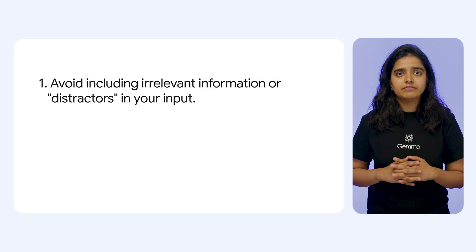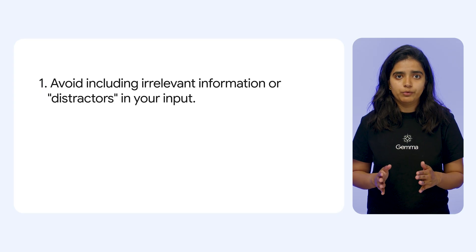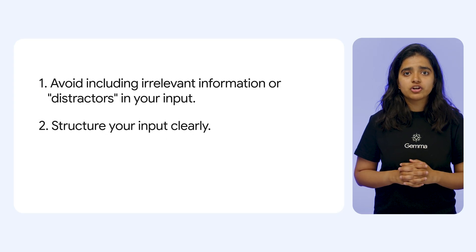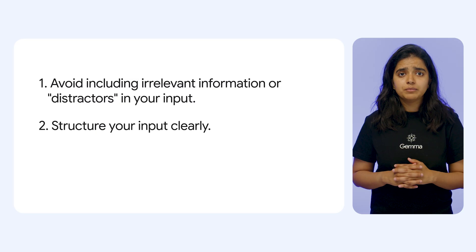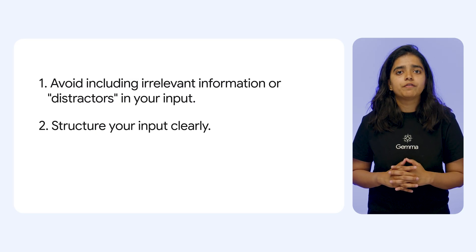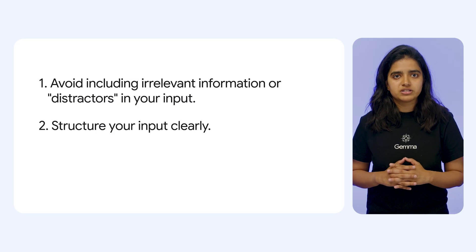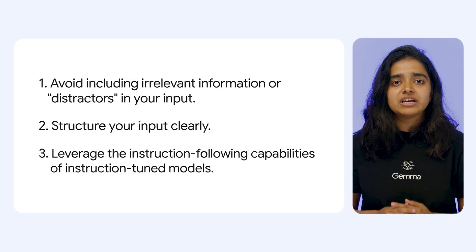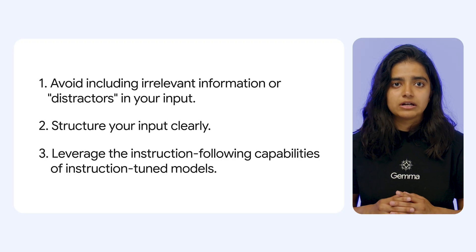While these models are capable of processing a massive amount of input, how you prompt them still significantly impacts the quality of the response. Therefore, it's worth following a few best practices. First, try to avoid including irrelevant information or distractors in your input — keep the focus on what the model needs to know. Second, structure your input clearly. If you're providing multiple documents or pieces of information, separate them distinctly. The same goes for few-shot examples — make them easy for the model to parse. And finally, leverage the instruction-following capabilities of instruction-tuned models, and clearly and precisely specify the task that you want the model to perform.